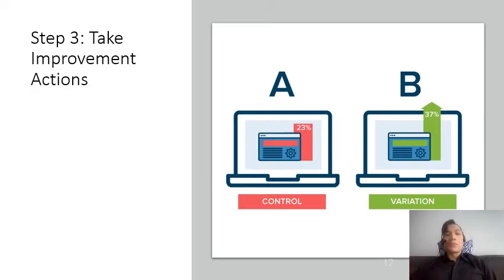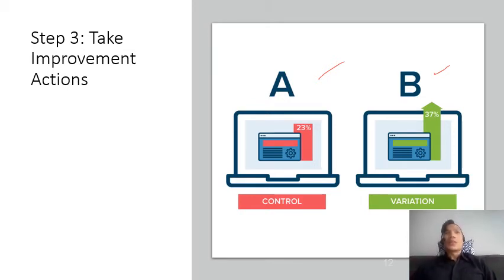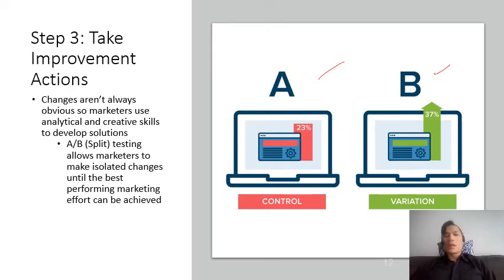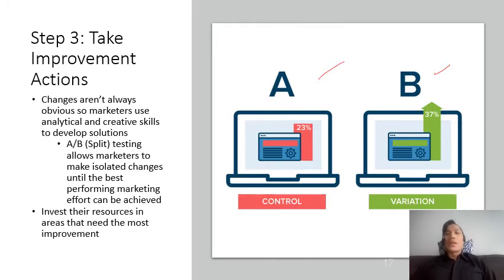We can also take improvement actions. Imagine you have two different campaigns, A and B. We can see which is more positively responsive. We have a control — the status quo campaign — and a variation campaign to see whether people like the new changes. Changes aren't always obvious, so marketers need analytical and creative skills. For example, using A/B split testing allows marketers to make isolated changes until the best-performing marketing effort is achieved, then invest resources in the areas that perform best.